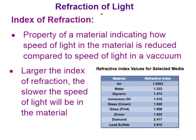The amount of bending that light does depends on the speed of light in each of the materials. The greater the difference in speeds between the materials, the more the light is going to bend as it crosses that boundary. Every material has an index of refraction — a property indicating how much the speed of light in the material is reduced compared to the speed of light in a vacuum. Most materials also have an index of refraction that depends on the light's wavelength, with longer wavelengths having smaller indices of refraction.